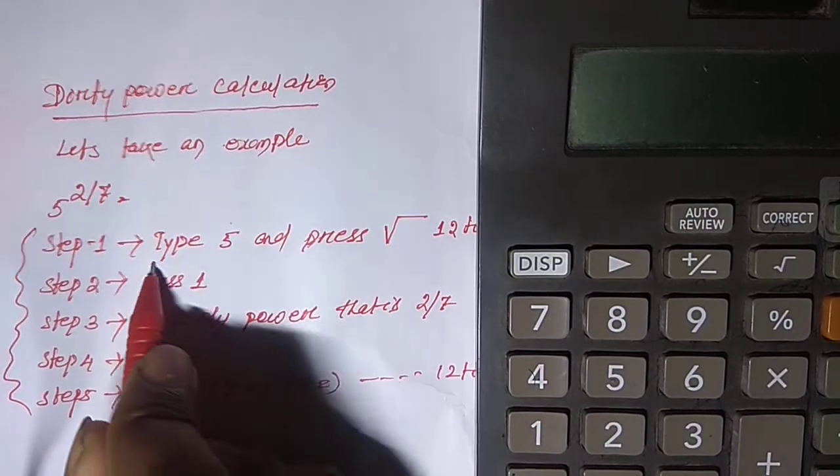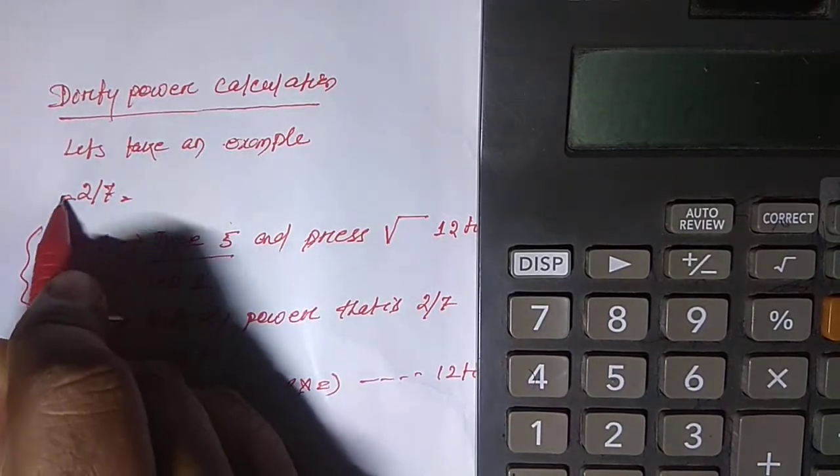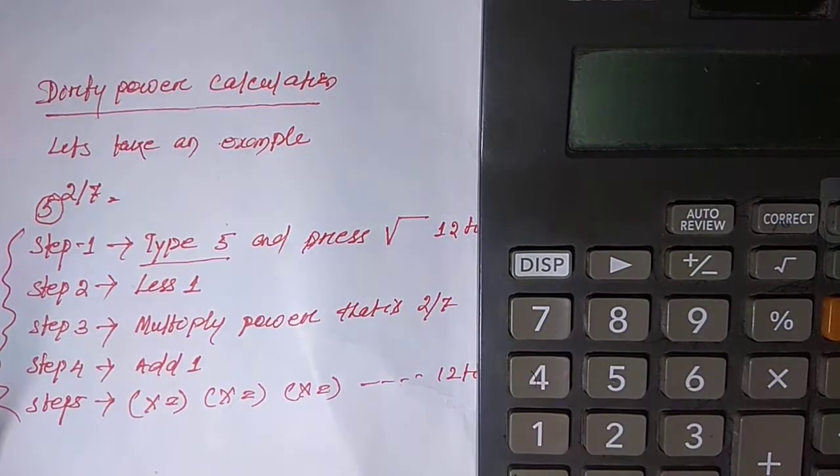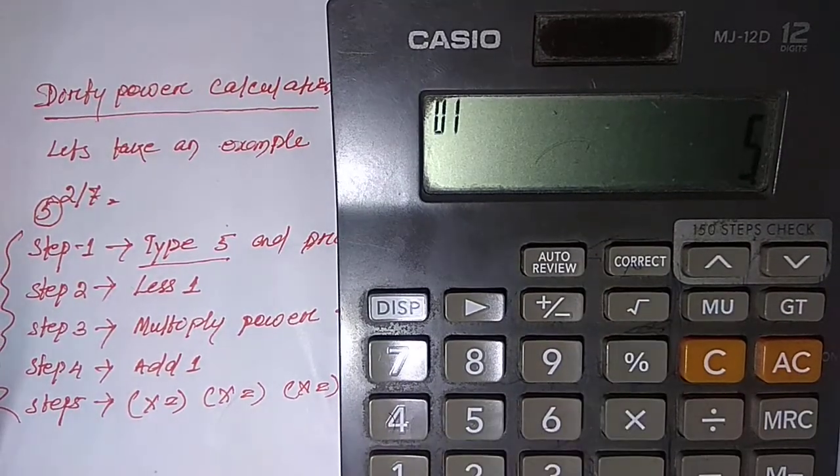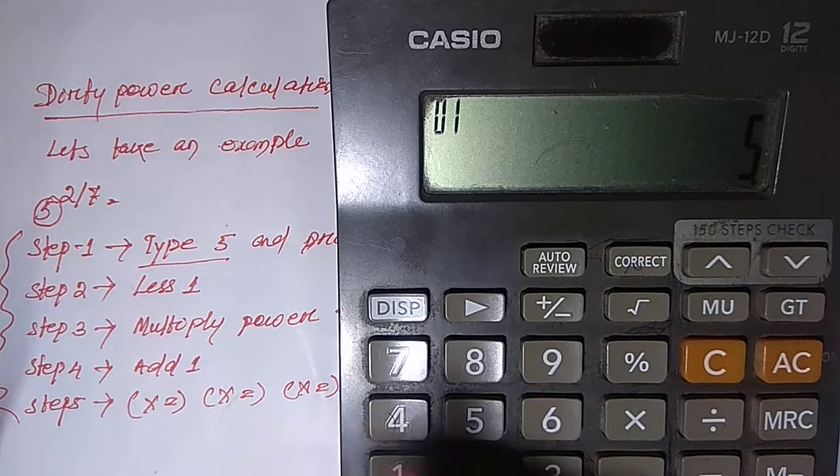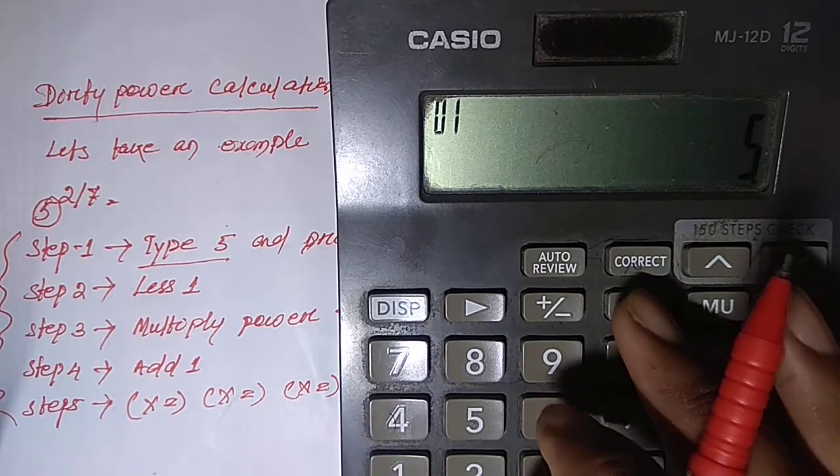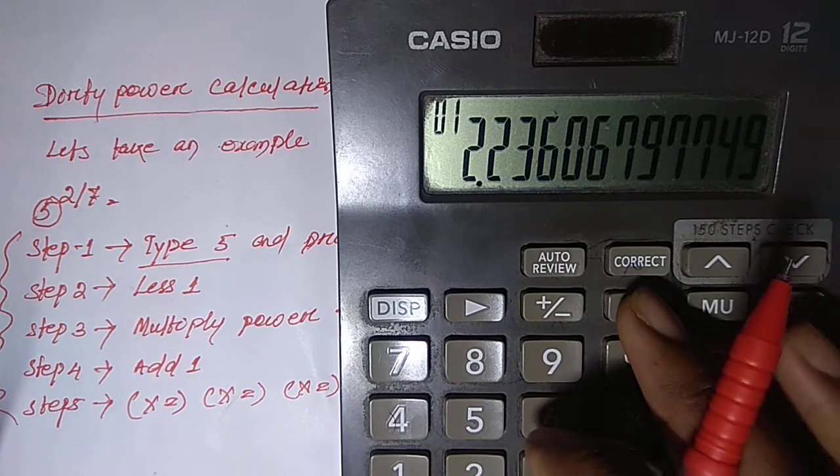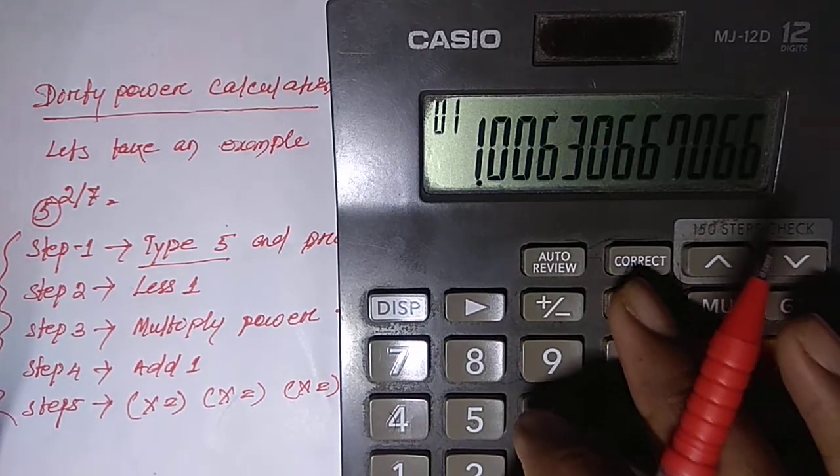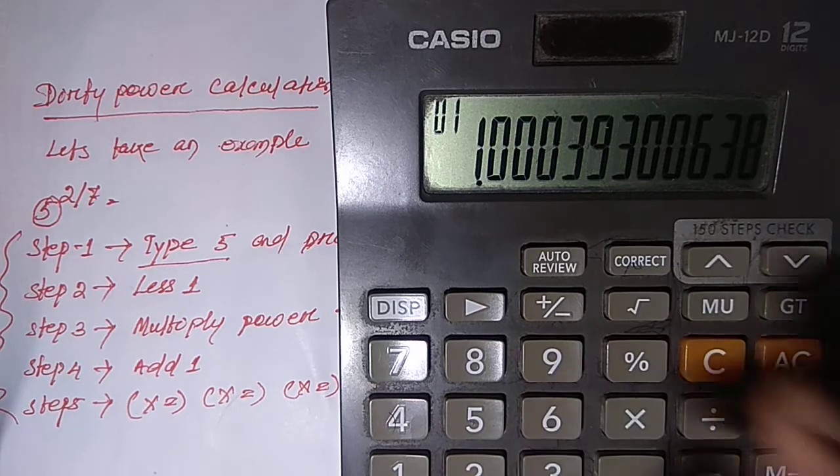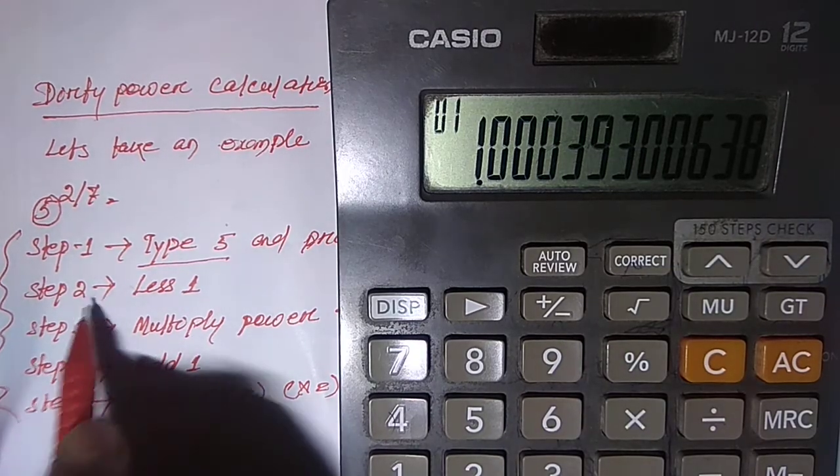First type 5 - 5 is the base. You have to type 5, then press 12 times root over symbol. This is the root over symbol: 1, 2, 3, 4, 5, 6, 7, 8, 9, 10, 11, 12. Then step 2.